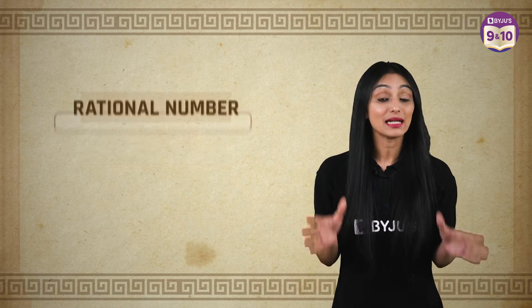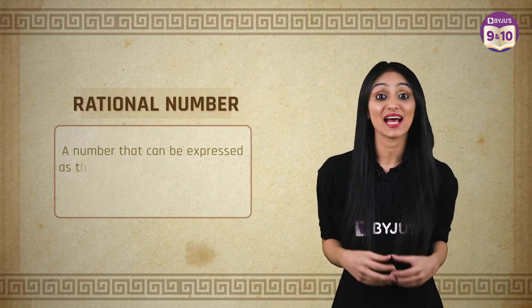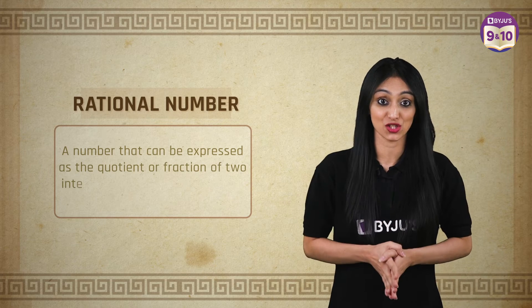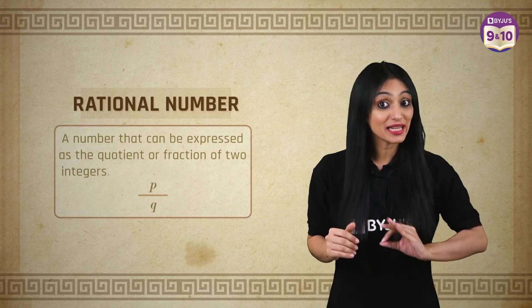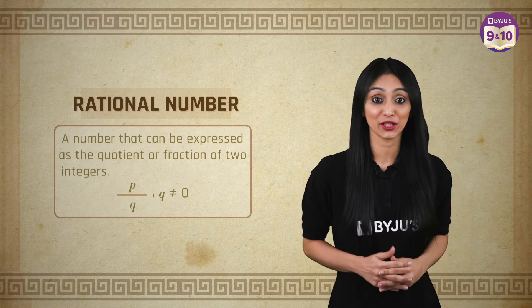We know that a rational number is a number that can be expressed as the quotient or fraction of two integers, P by Q, a numerator P and a non-zero denominator Q.